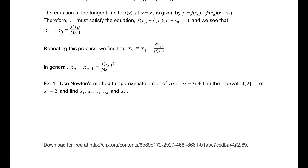So let's go through an example. We're going to approximate a root of f of x equals x cubed minus 3x plus 1 in the interval 1 to 2. We're going to take the initial point x naught equals 2. So let's go ahead and find x₁. x₁ equals, based on our formula, x₀ minus f of x₀ divided by f prime of x₀.